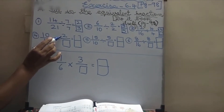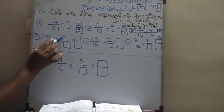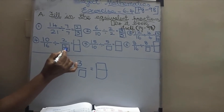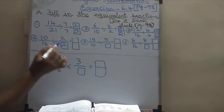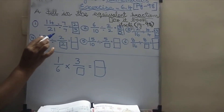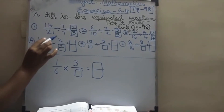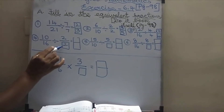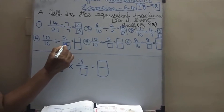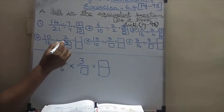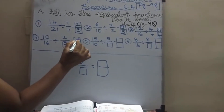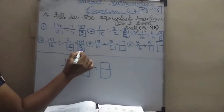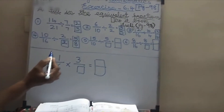In the numerator, what number has been given? 2. So the same number should be there in the denominator also. Don't forget — what number is given in the numerator, the same number should be there in the denominator. So here also 2 will come. If we say the 2 tables: 5 2s are 10 and 8 2s are 16. So, 5 by 8.